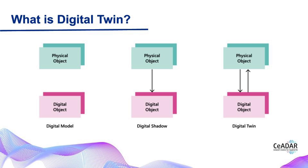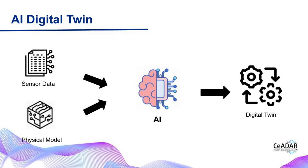Without an accurate model of the production system, we can't make the most of our digital twin. But with the help of simulation, analysis, data accumulation, mining, and AI, we can make sure that the digital model is a perfect match for the real physical system. And that is why we need AI digital twin — this is the key to making our manufacturing systems smarter and more efficient. So let's embrace AI and digital twin and take our production to the next level.